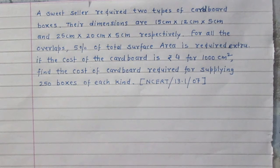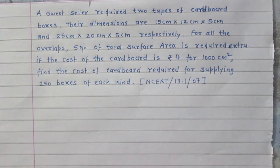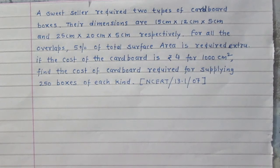A sweet seller required two types of cardboard boxes. Their dimensions are 15 cm by 12 cm by 5 cm and 25 cm by 20 cm by 5 cm respectively. For all the overlaps, 5% of the total surface area is required extra. The cost of the cardboard is rupees 4 for 1000 cm².